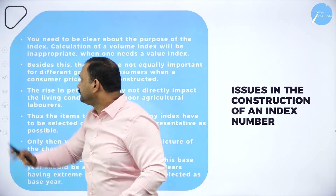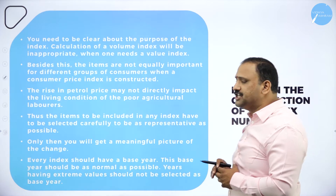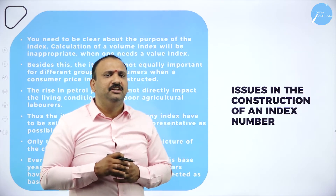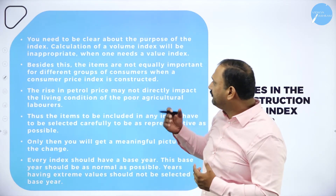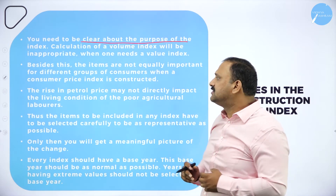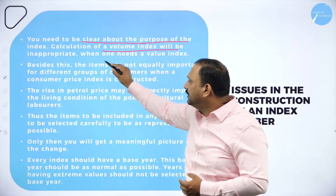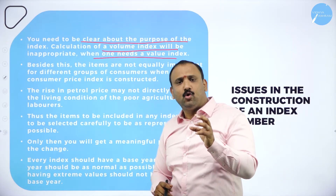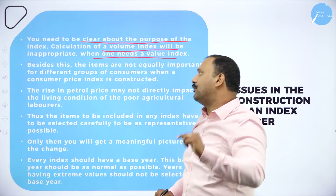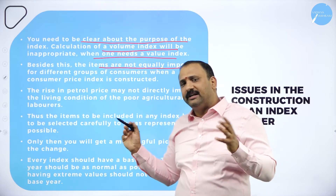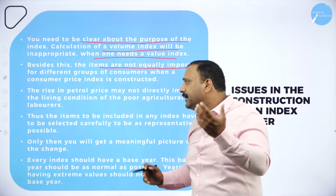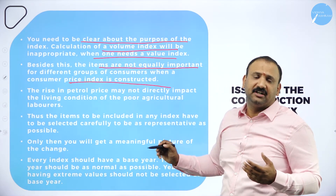Moving forward, we need to understand the issues involved in the construction of an index number. There are many factors on which the index number faces problems or challenges. The first thing is that you need to be clear about the purpose of the index — on what basis and on what factors is the index being developed. The calculation of a volume index will be inappropriate when one needs a value index. We cannot just go by volume every time. Similarly, items that are not equally important in different groups — every single commodity might not be considered important. That is where the consumer price index is built upon.